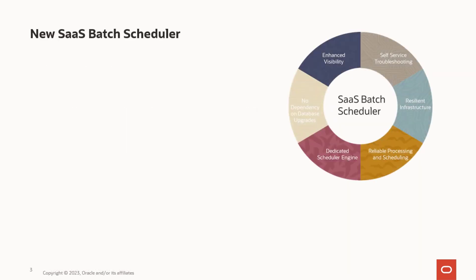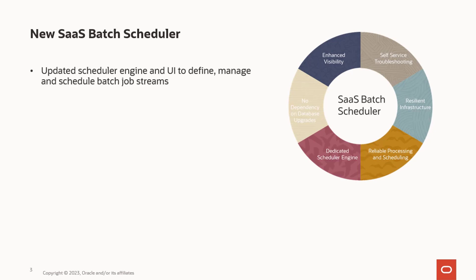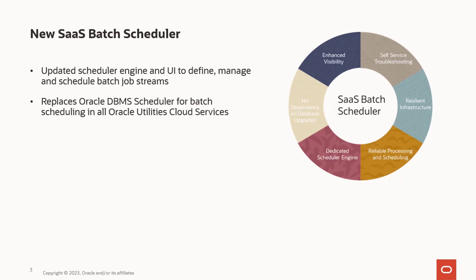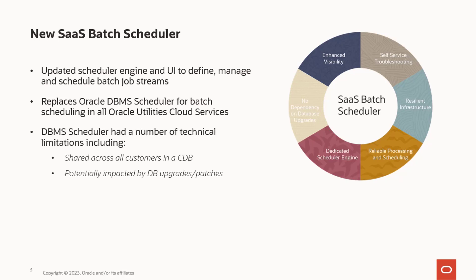The new SaaS batch scheduler is being introduced with an updated scheduler engine and user interface to define, manage, and schedule batch job streams. It replaces Oracle DBMS scheduler for batch scheduling in all Oracle Utilities Cloud Services that we have been currently using to schedule batch job streams. We introduced the new scheduler as we were facing challenges while enhancing the batch stream experience due to DBMS scheduler limitations, such as shared services across multiple customer tenancies and being highly coupled with database upgrades.